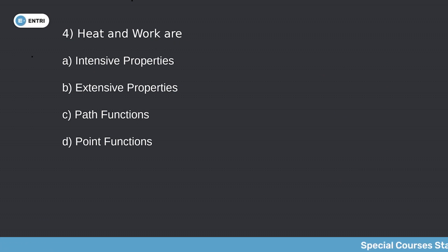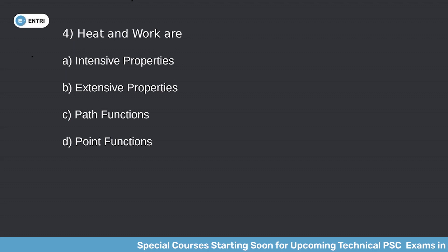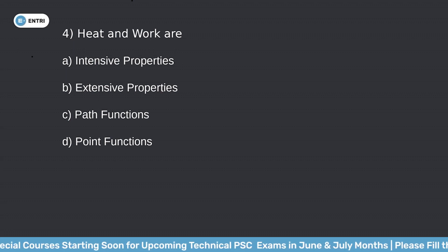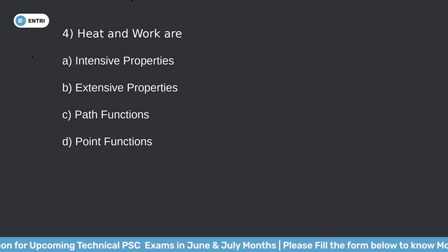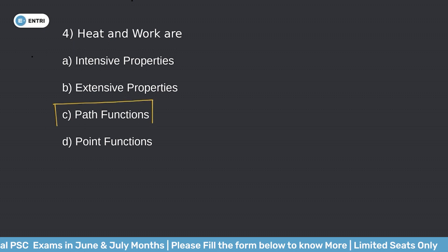Question 4: Heat and work are — option A: intensive properties; option B: extensive properties; option C: path functions; option D: point functions. Heat and work are energy interactions in thermodynamics, and both are path functions.